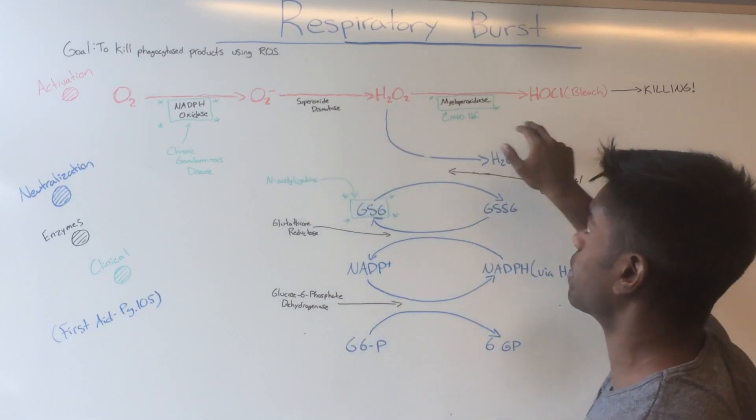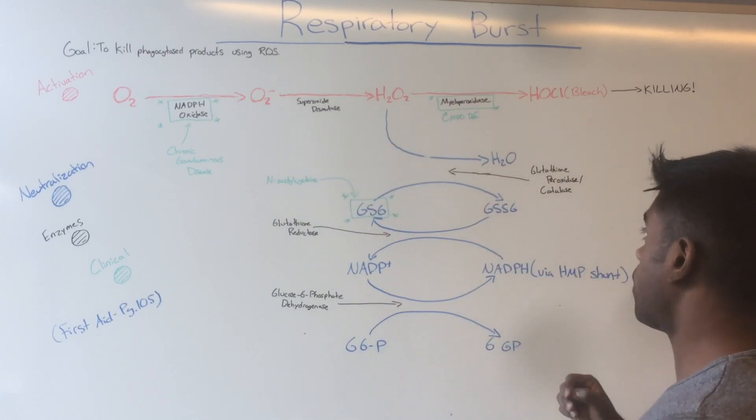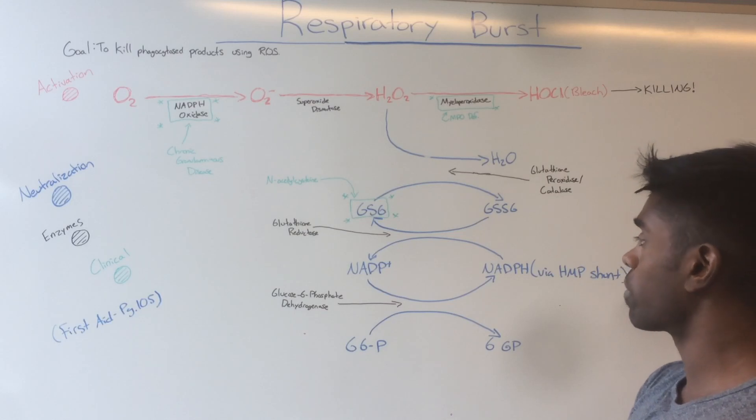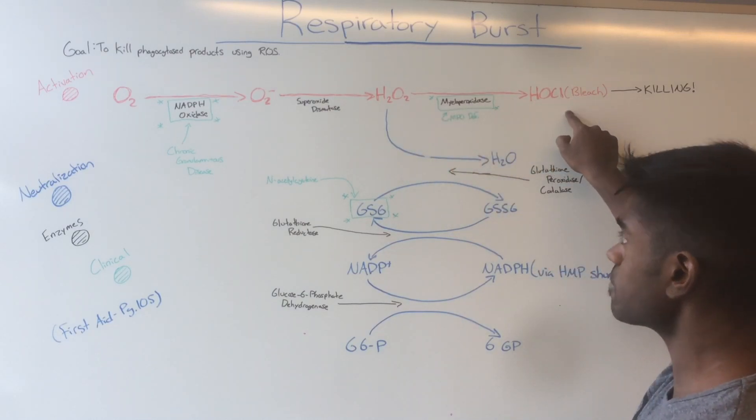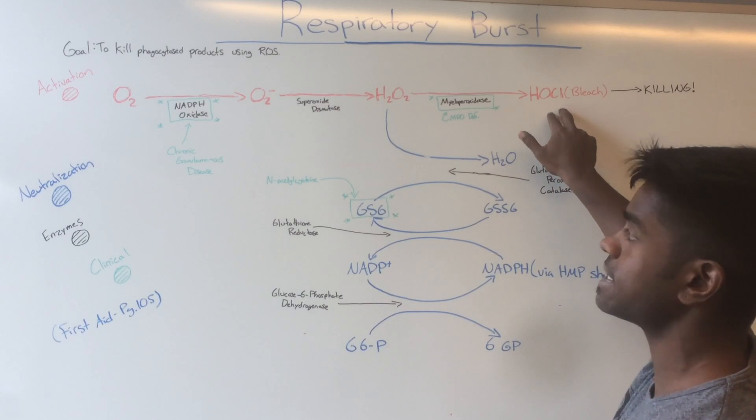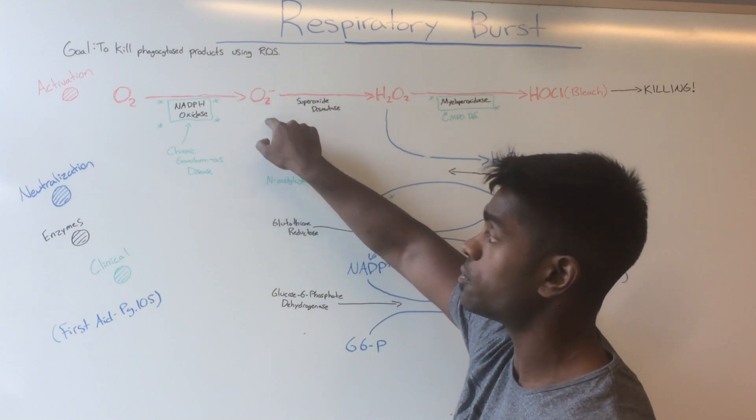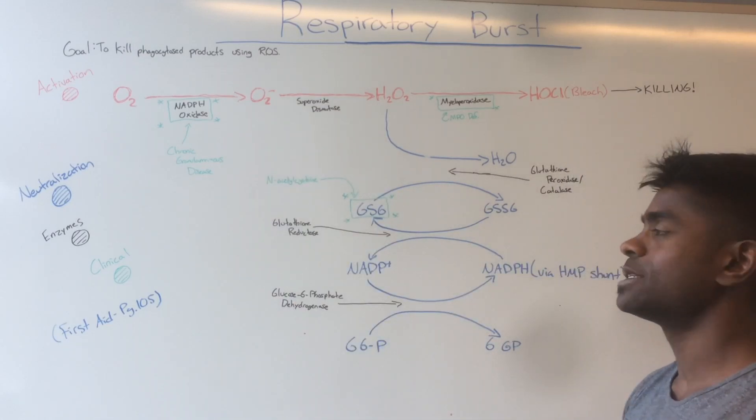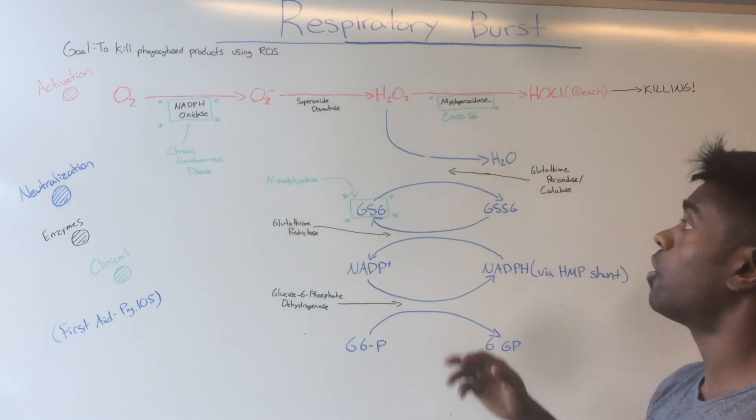However, it doesn't have as large a toll on catalase-negative organisms because they are still able to convert H2O2 into HOCl without it always being converted to H2O. Therefore, you get HOCl as a backup since the superoxide is not present. So catalase-negative organisms are not affected as much with NADPH oxidase deficiency.